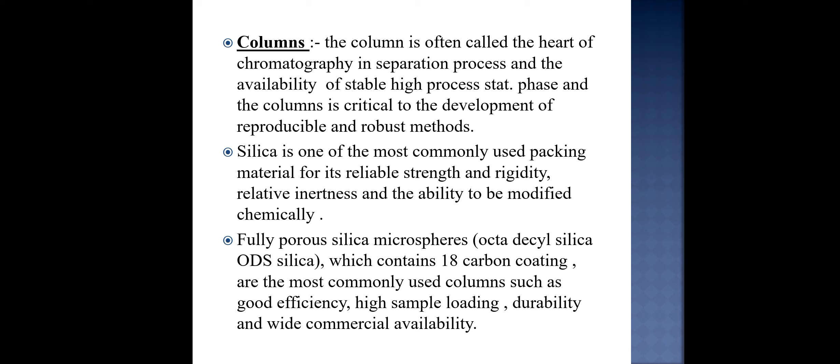Next we will discuss about the column. As we know that column is often called the heart of chromatography because it is the main component in which the sample can be separated. Silica is used. Silica is one of the most commonly used packing material for its reliable strength and rigidity, relative inertness and the ability to be modified chemically. In the stationary phase, the column is critical to development of the reproducible and robust method. Fully porous silica microspheres are also used in which it includes octadecyl silica which is also known as ODS silica which contains 18 carbon coating which is the most commonly used column because of its good efficiency, high sample loading, durability and wide commercial availability. This is the main point used in HPLC is ODS silica. Octadecyl silica is used in which 18 carbon atoms, 18 hydrocarbons are composed.